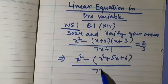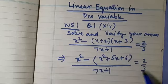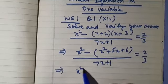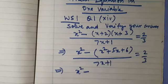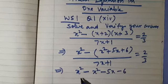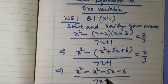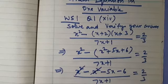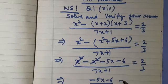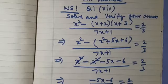So we have upon (7x plus 1) equals 2 by 3. Now multiply, so this is minus x² minus 5x minus 6 — the signs will change. Upon (7x plus 1) equals 2 by 3. x² and x² get cancelled, so you are left with minus 5x minus 6 upon (7x plus 1) equals 2 by 3.